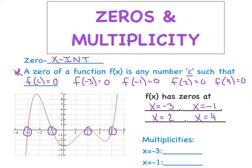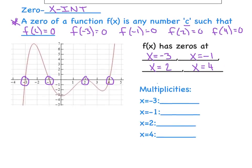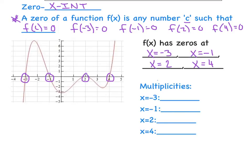Now, what in the world is multiplicity? Basically for us today, multiplicity describes whether the graph crosses through the x-axis or bounces off of it. Because the graph crosses through at negative 3, the multiplicity is 1. Same at negative 1 — the graph crosses, so multiplicity is 1. However, at x equals 2, the graph touches but then bounces off, so the multiplicity is 2. And at x equals 4, it crosses, so the multiplicity is back to 1.